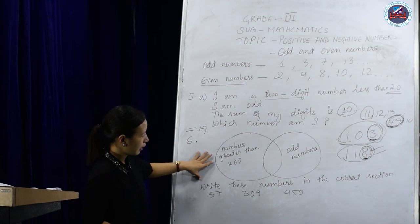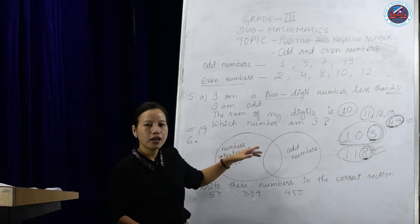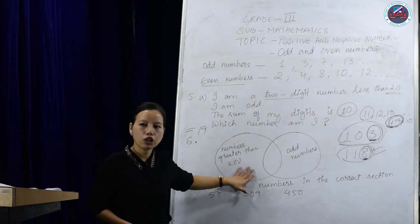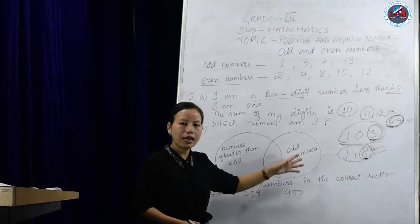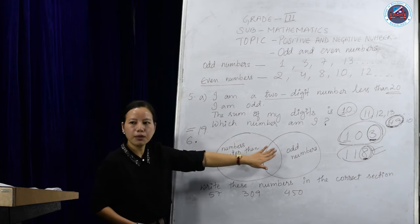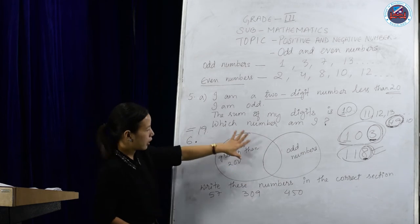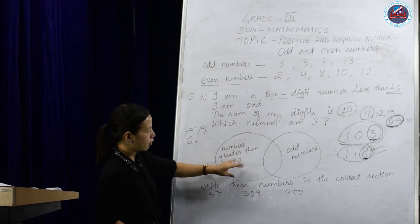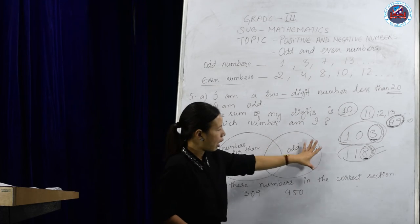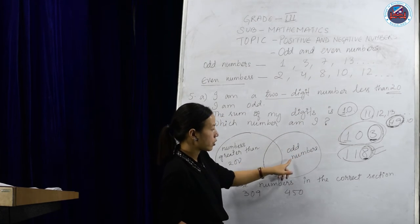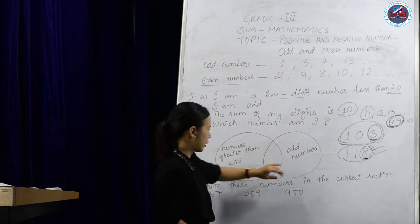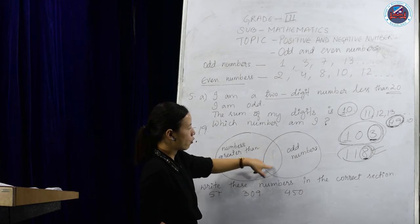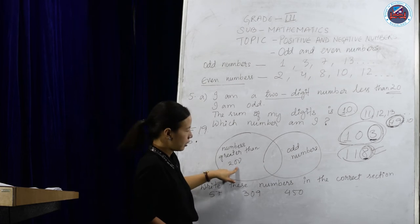Now let's go to the Venn diagram. First, let us understand what a Venn diagram is. A Venn diagram is a diagram or picture chart that shows how two things are related or different. The center or middle part is what they share. Here we have two circles: one part is for numbers greater than 200, and the other part is for odd numbers. The center part will be for numbers that share both properties — odd and greater than 200.